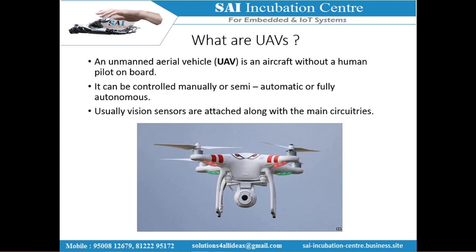An unmanned aerial vehicle (UAV) is an aircraft without a human pilot on board. You can control it either manually, semi-automatically, or it can be fully autonomous. You can fix a GPS coordinate target and your quadcopter will go to that area and come back. These quadcopters also carry sensors such as cameras, obstacle avoidance sensors, or environmental temperature sensors.